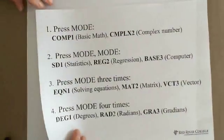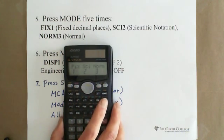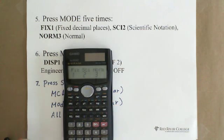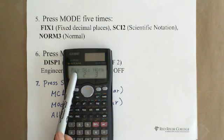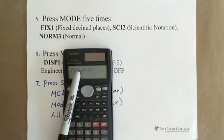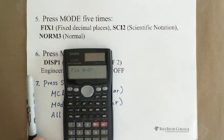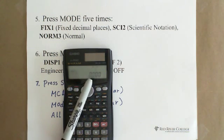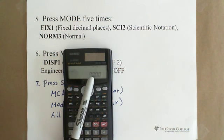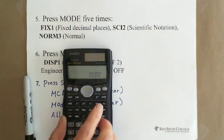And then if you press the mode again five times, you can see you have FIX1, which is the fixed decimal place you can choose. For example, you press one for fixed decimal place. Fix zero to nine, how many decimal places you want. If you fix three decimal places, they give you 0.000. Everything means when you calculate it, it will show three decimal places.